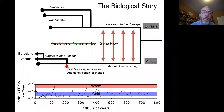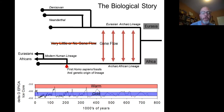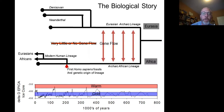Those two lineages radiate into all the modern lineages — what you can think of as ethno-linguistic groups today of Africans and Eurasians. All Eurasians are descended from that very small founder population that left Africa around 70,000 years ago — and by small, I mean a couple hundred people.